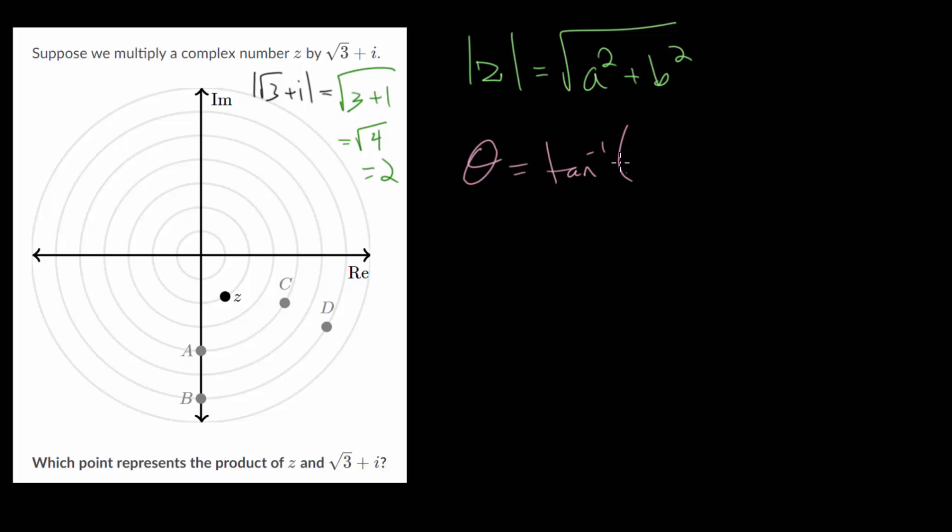So this complex number has a magnitude of 2 and we can compute its angle. It's the inverse tangent of the imaginary part divided by the real part. After computing this in our calculator, making sure we're in degree mode, we get 30 degrees. So this looks to be a point in the first quadrant that is on the second rung and 30 degrees above the real axis right here. It has a length of 2 and this angle is 30 degrees.